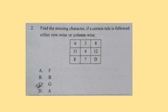Question 2: Find the missing character if a certain rule is followed either row-wise or column-wise. Think about your answer. Here, if you see the first column: 6, 11, E — the difference of 6 and 11 is 5, and E is the fifth letter. In the third column: 8, 12, D — the difference of 8 and 12 is 4, and D is the fourth letter. So the difference of 4 and 3 is 1, and the first letter is A. So option D is the correct answer.